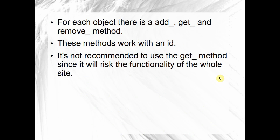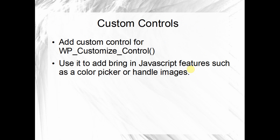For each object there's an add, get, and remove method — these work with an ID, which you can name anything you want. It's not recommended to use the get method as it risks breaking site functionality, so it's better to use the add method. You can also add custom controls using WP_Customize_Control.